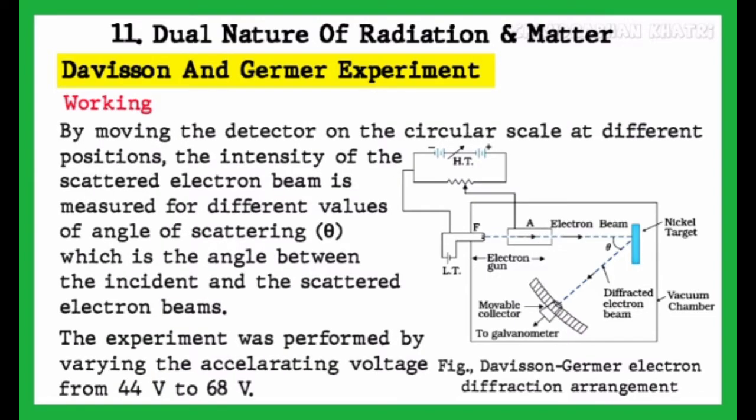By moving the detector on the circular scale at different positions, the intensity of the scattered electron beam is measured for different values of angles of scattering theta, which is the angle between the incident and the scattered electron beams.